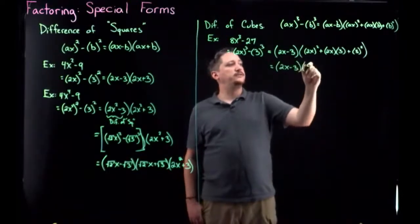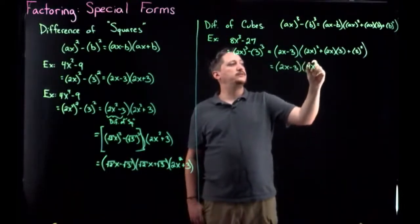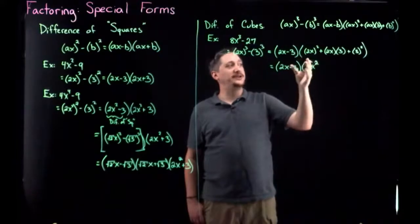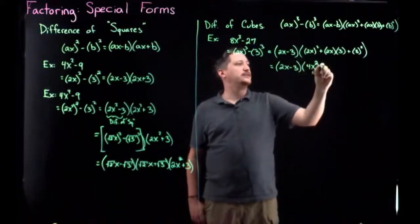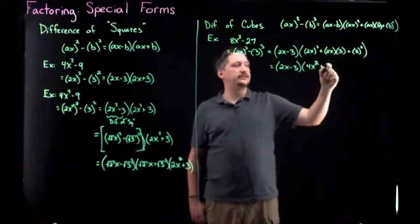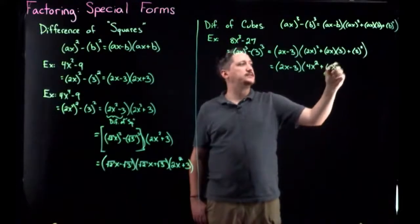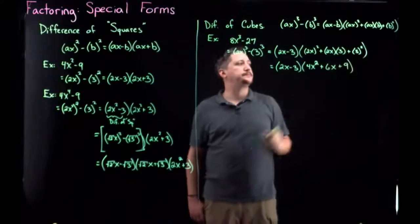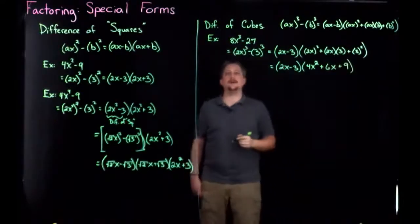So, I'm gonna get 2x minus 3. 2x quantity squared is 4x squared. 2x times 3 is gonna be 6x. And 3 squared is 9. And there we have it.